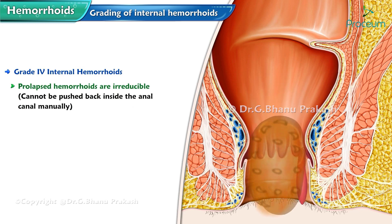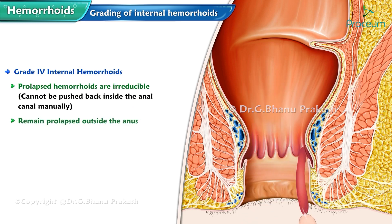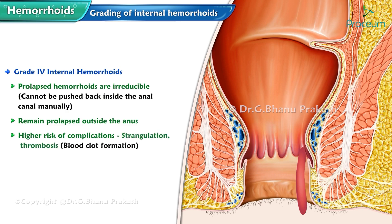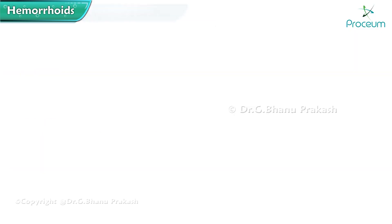In grade 4 internal hemorrhoids, the prolapsed hemorrhoids are irreducible, meaning they cannot be pushed back inside the anal canal manually and remain prolapsed outside the anus. This stage carries a higher risk of complications such as strangulation, thrombosis, and possible ulceration, and may be associated with significant pain and discomfort.